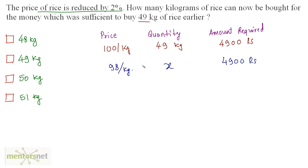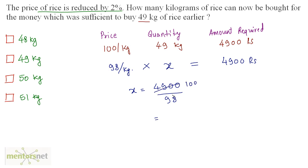So 4900 rupees is the amount and with this amount how much quantity of rice can be bought? This gives us 98 times x equals 4900. So x equals 4900 divided by 98, and that equals 50, since 49 times 100 is 4900 and 49 times 2 is 98. So 50 kg of rice can be bought.